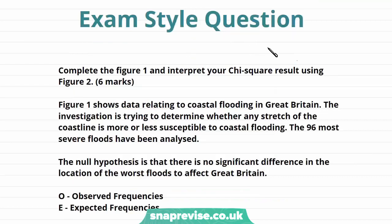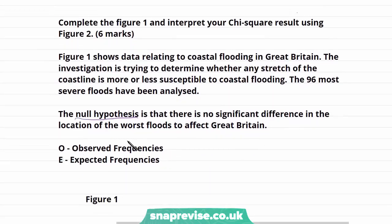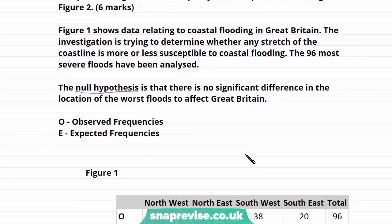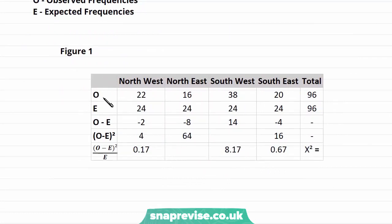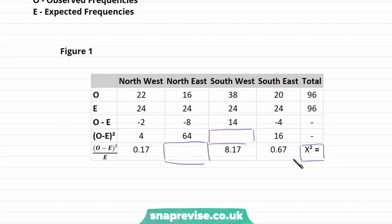Now we're going to answer an exam-style question — a more mathematical question, but I'll talk you through it. The question asks us to complete the figure and interpret the chi-squared results using Figure 2. Figure 1 shows data relating to coastal flooding in Great Britain, investigating whether any stretch of the coastline is more or less susceptible to flooding. The 96 most severe floods have been analysed, and the null hypothesis is that there is no significant difference in the location of the worst floods to affect Great Britain. In our table, O stands for observed frequencies and E stands for expected frequencies. Out of this 6-mark question, 3 marks come from filling in the table.